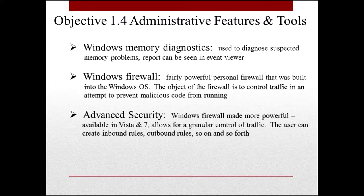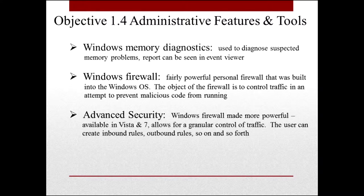Windows Firewall is a fairly powerful personal firewall built into the Windows operating system. The object of the firewall is to control traffic in an attempt to prevent malicious code from running on your machine. In Windows Vista and 7 you got Advanced Security, which is Windows Firewall made more powerful, allowing very granular control. You can create individual rules to manage inbound and outbound traffic. I use Windows Security Essentials and Advanced Security and that's all I've ever needed.